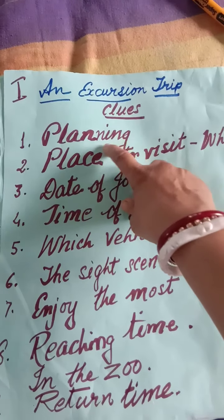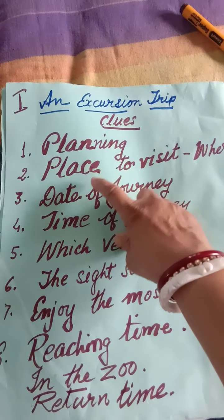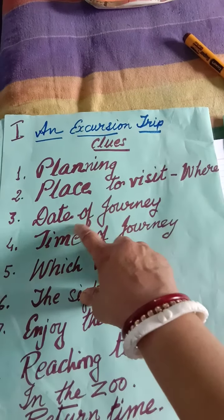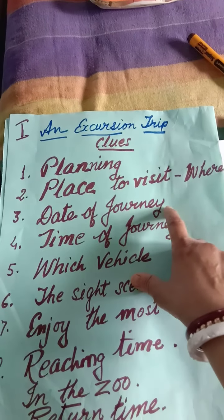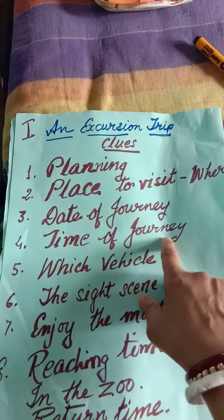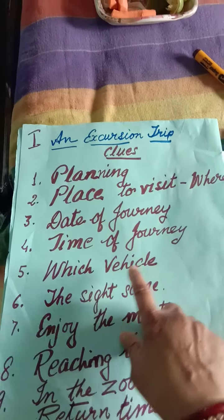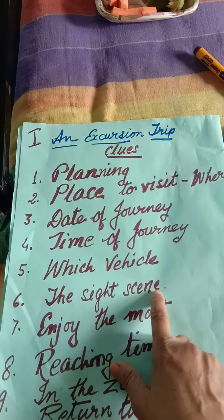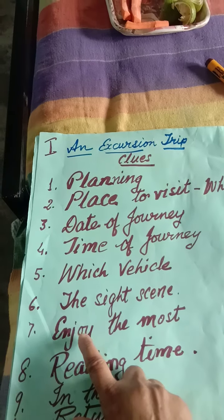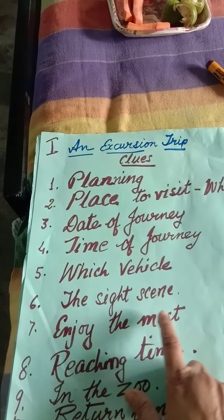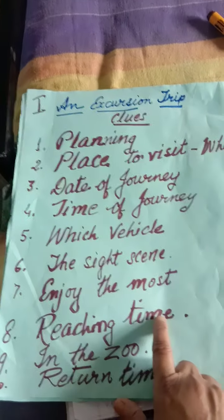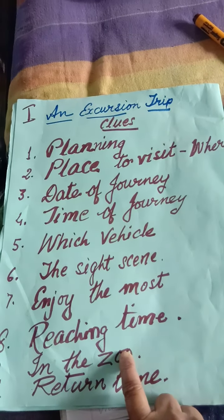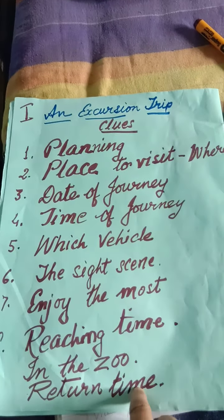Here are some points: first, planning of the trip; then place to visit; then date of the journey; then time of journey; then which vehicle you went by; then the sight or scene you enjoyed the most; then reaching time at the place; in the zoo, how did you enjoy and what did you see; then return time.